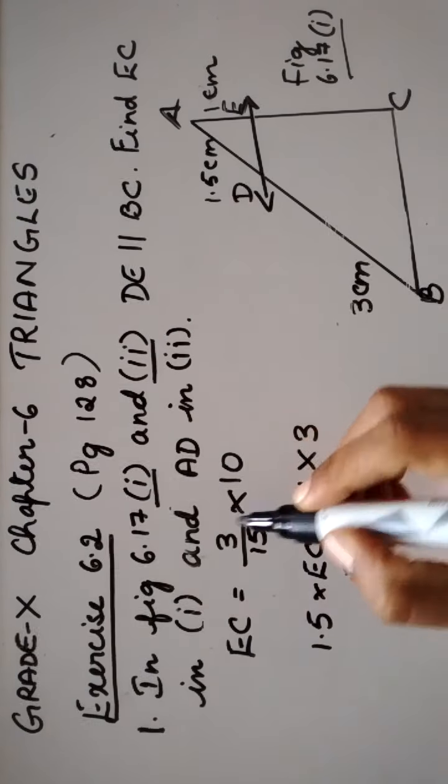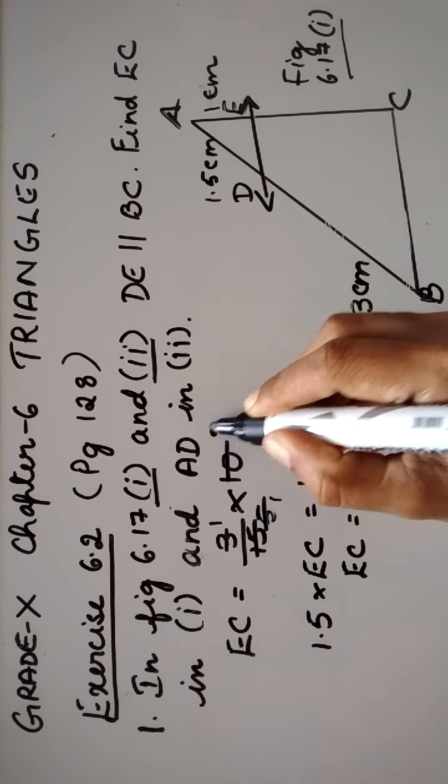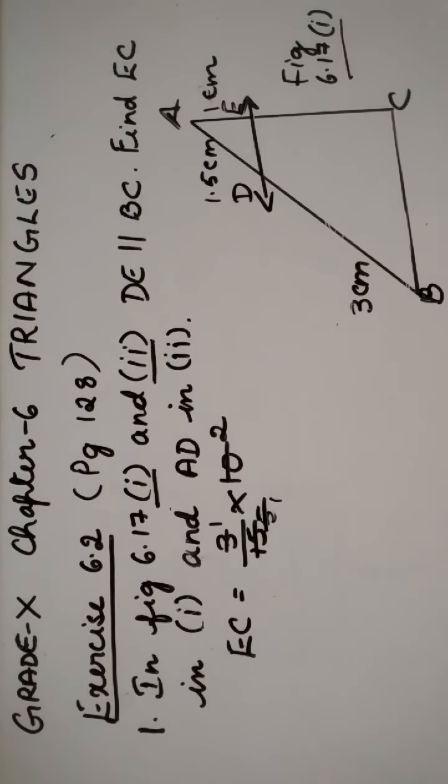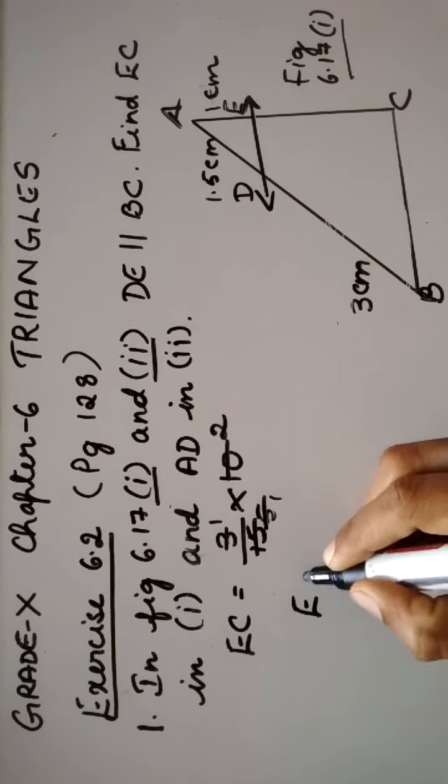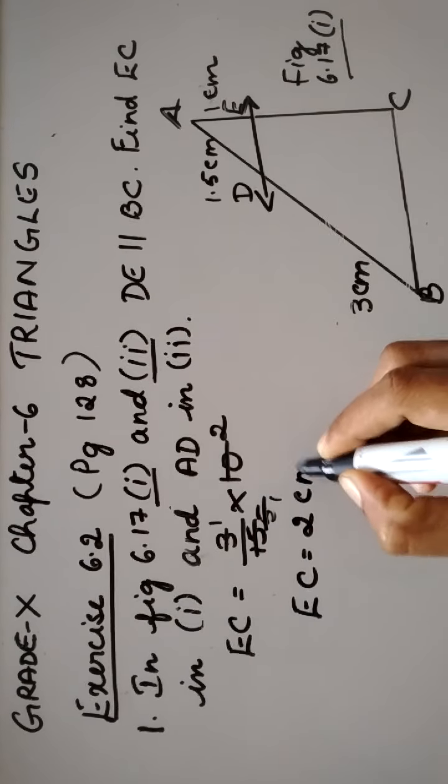So you get here 3 1's are 3, 5's are 15, 5 1's are 5, 2's are 10. So what is the value of EC now? EC is equal to 2 centimeter.